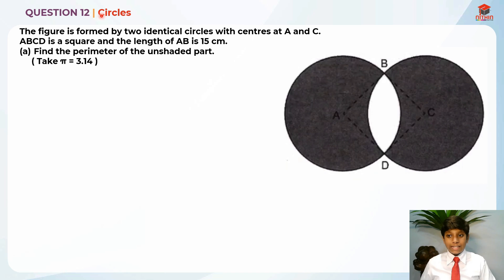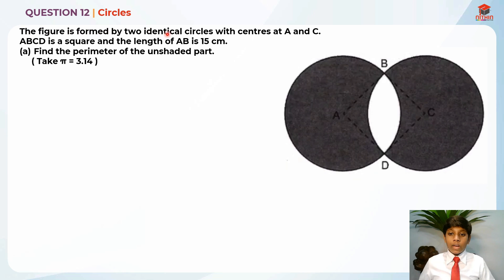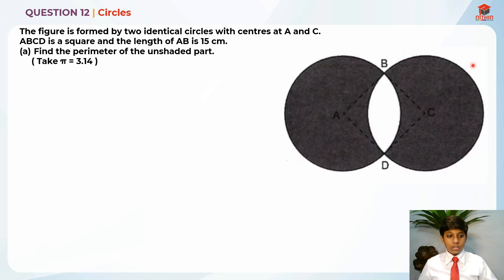This is question 12 and this question is testing us on circles. Let's read for Part A — this question also has a Part B. The figure is formed by two identical circles with center A and C. A is over here — this is the center — and C is over here — this is the center of the circle. So ABCD is a square.